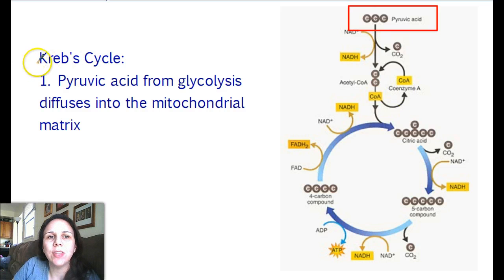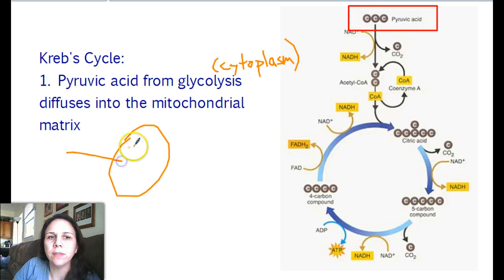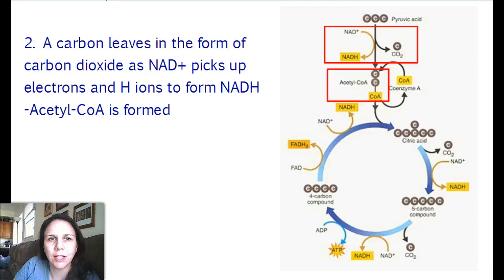Step one. Step one is that the pyruvic acid from glycolysis, which if you remember occurred in the cytoplasm, so the pyruvic acid that was formed from glycolysis in the cytoplasm diffuses through the mitochondrion and then that membrane inside goes in there and it hangs out in the middle of the mitochondria. So there it is, there's our three carbon molecule pyruvic acid from glycolysis.